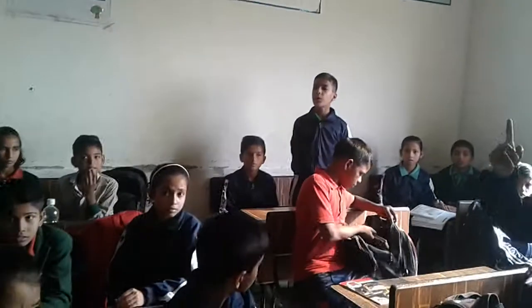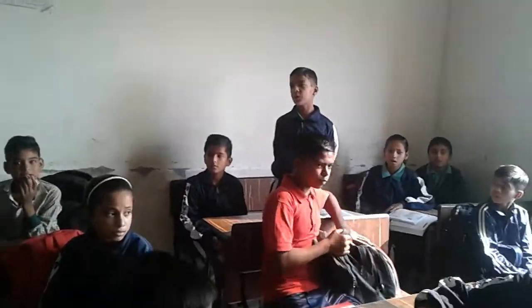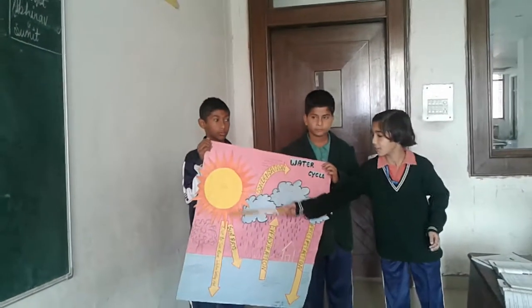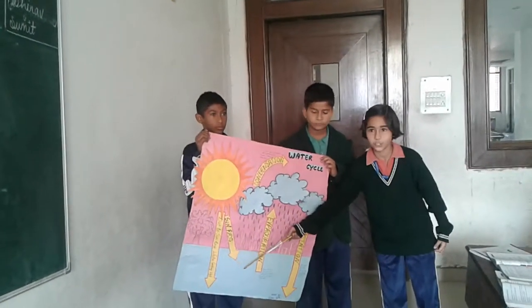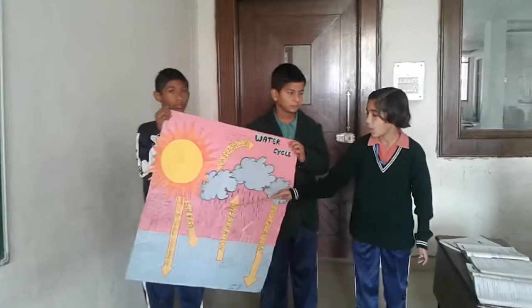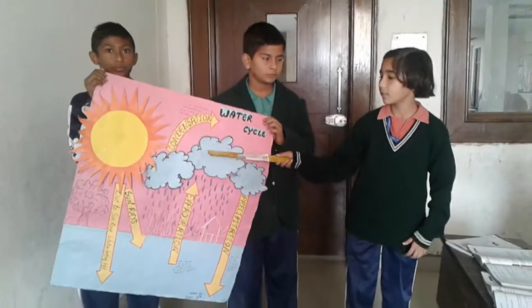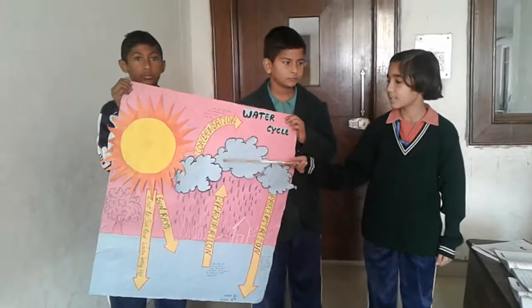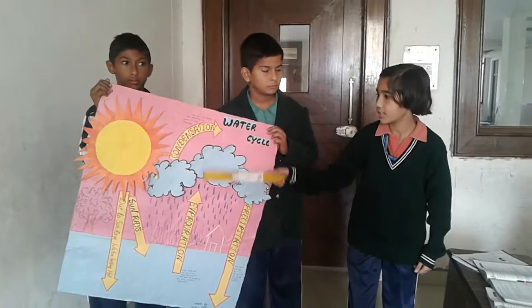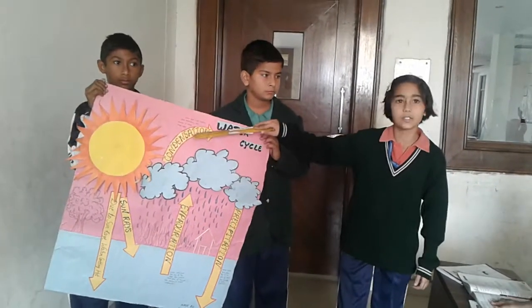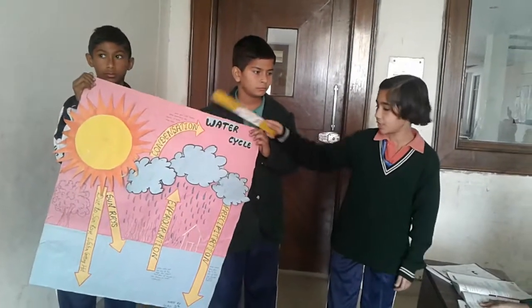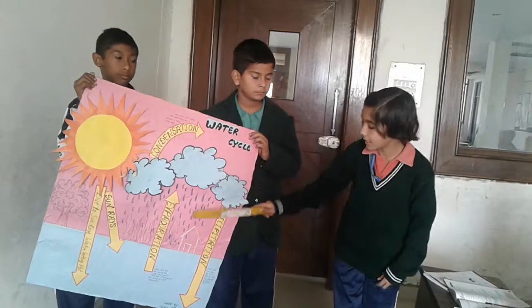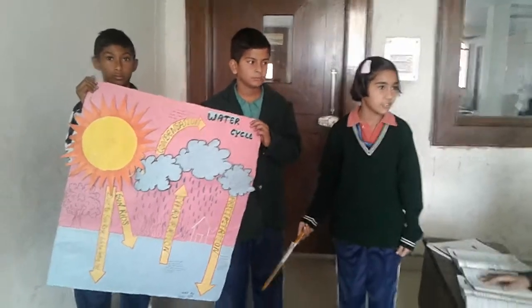This is the water cycle. If the sun rays are going into the ocean or river, the steam goes out and comes up with the gases — it's called evaporation. And when it's mixed with gases, it's called condensation. From the clouds, the rain goes out — it's called precipitation. It's a water cycle.